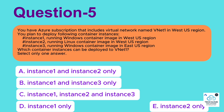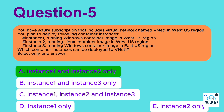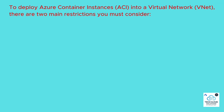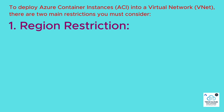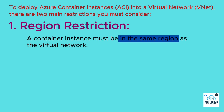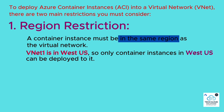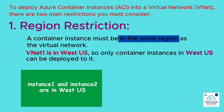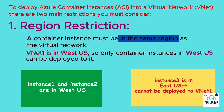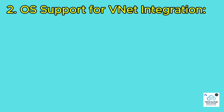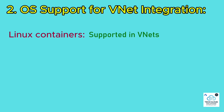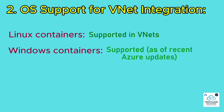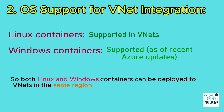Correct answer: Instance 1 and Instance 2 only. To deploy Azure Container Instances (ACI) into a virtual network, there are two main restrictions. First, region restriction: a container instance must be in the same region as the virtual network. VNet1 is in West US, so only container instances in West US can be deployed to it — Instance 1 and Instance 2 are in West US, while Instance 3 is in East US and cannot be deployed to VNet1. Second, OS support for VNet integration: Linux containers are supported in VNets, and Windows containers are also supported as of recent Azure updates. So both Linux and Windows containers can be deployed to VNets in the same region.